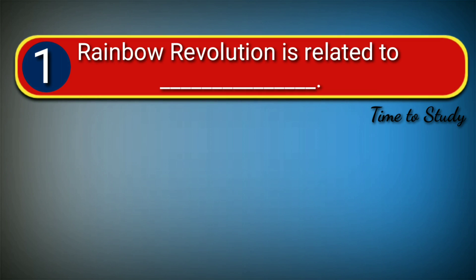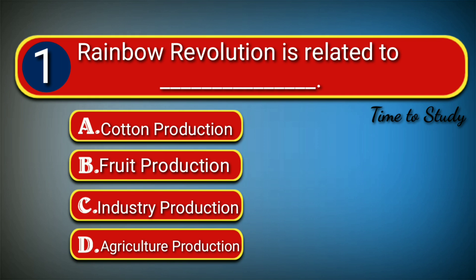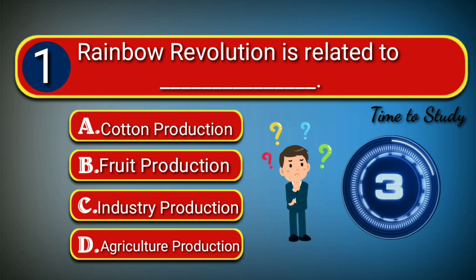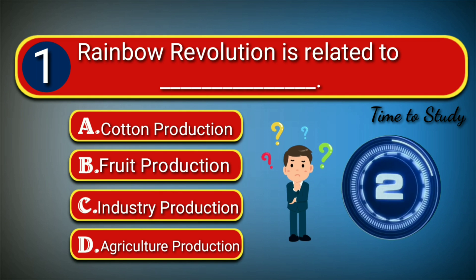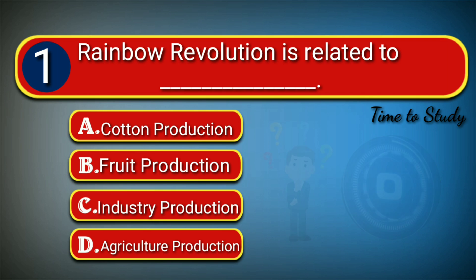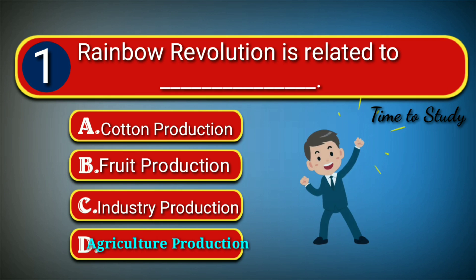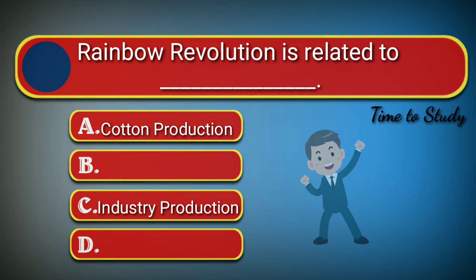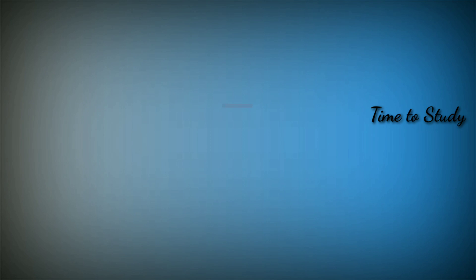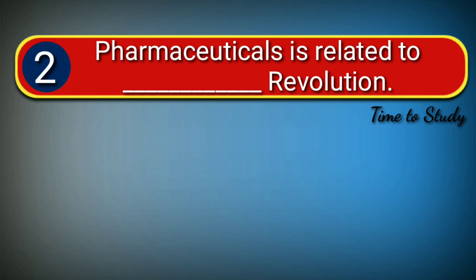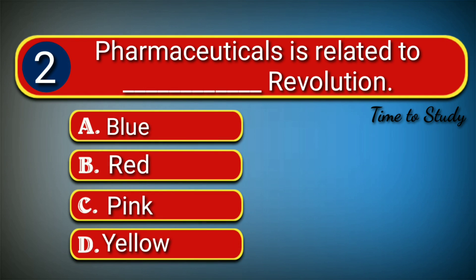First question: Rainbow revolution is related to agriculture production. Second question: Pharmaceutical is related to pink revolution.